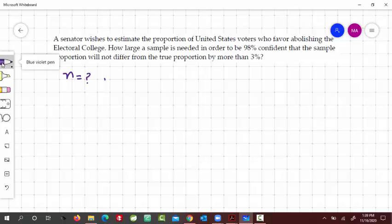We are given that margin of error is 3%, so E is 3%, 0.03. And confidence level is 98%.